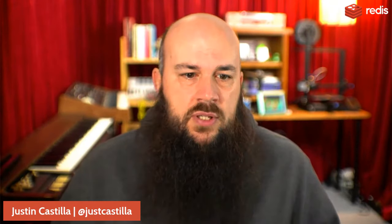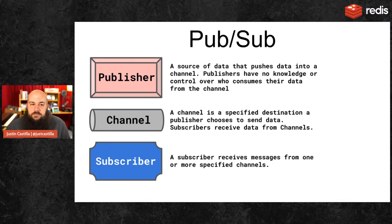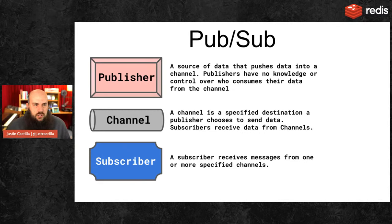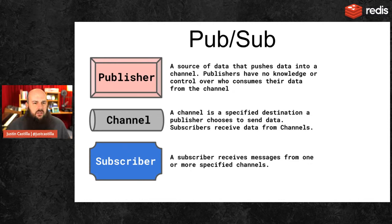There are three main components to conceptualize PubSub messaging. First, there's a publisher — a client that sends out messages. It could be a sensor, an IoT device measuring temperature, humidity, pressure, or air quality. It's a source of data that pushes data into a channel. Publishers have no knowledge or control over who consumes their data. A channel is a specified destination a publisher chooses to send data to. Subscribers receive data from channels — channels aren't data structures we manipulate, we just send data into them.